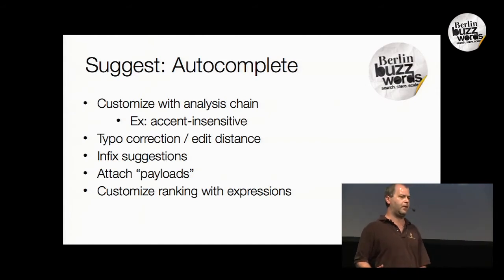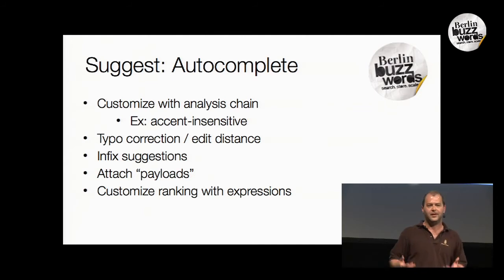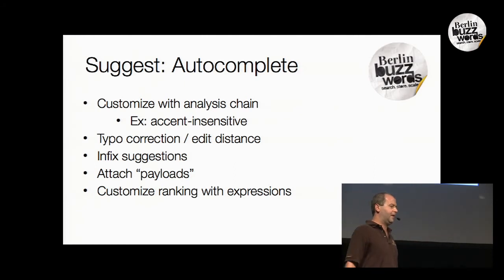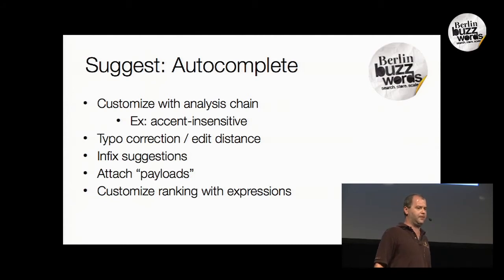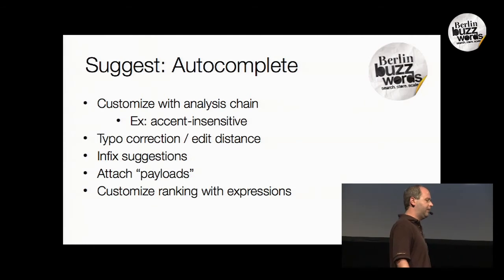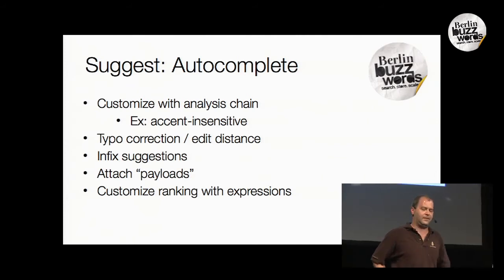The suggester can use the analysis chain, so you can implement rules like case sensitivity or accent removal — a powerful combination. It also has the ability to correct typos, which can be appreciated but risky since it could bring back bad suggestions. There's also another way to correct errors: infix suggestions, where the words are in the completely wrong order. This happens occasionally — you're typing keywords and it suggests one in the middle and reorganizes the word order. It's rare but useful in some cases.